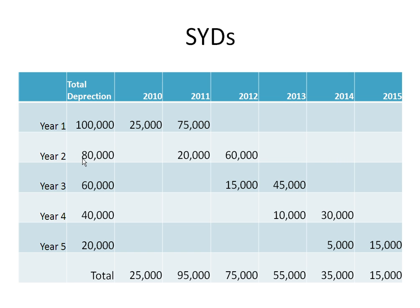Then I go on to my next year. I know that the next year is $80,000. But three months of that is in 2011, and nine months of that is in 2012. I go through that same process and look at how much depreciation I would book for each year. In 2010 it would be $25,000. In 2011 it would be $95,000 — $75,000 from nine months of year one, and $20,000 from three months of year two. I would continue on figuring those out for each of the years.